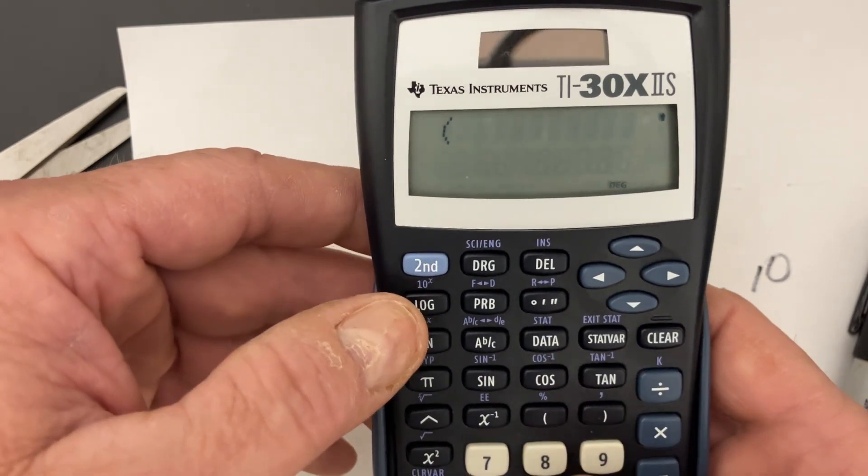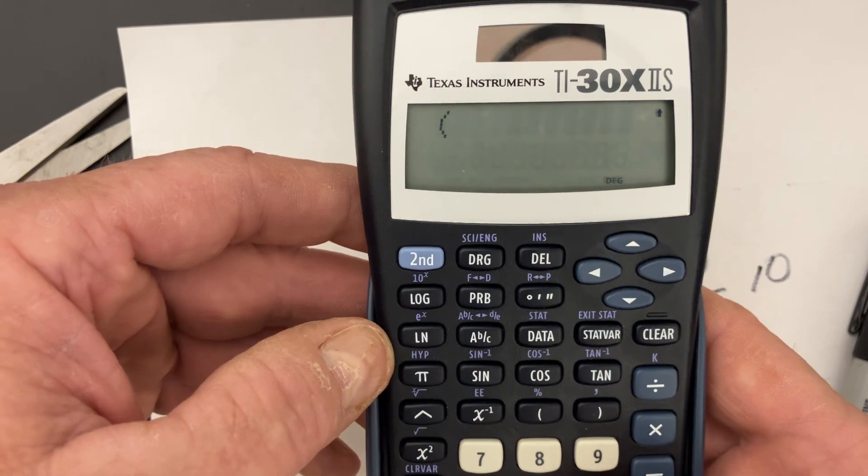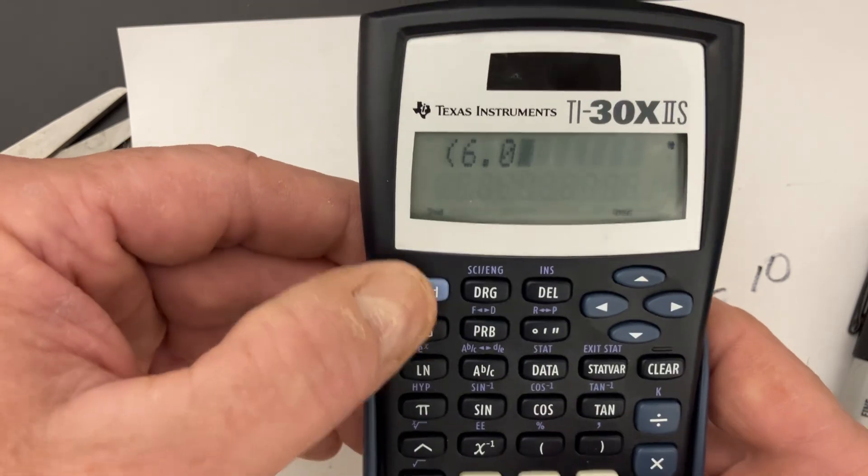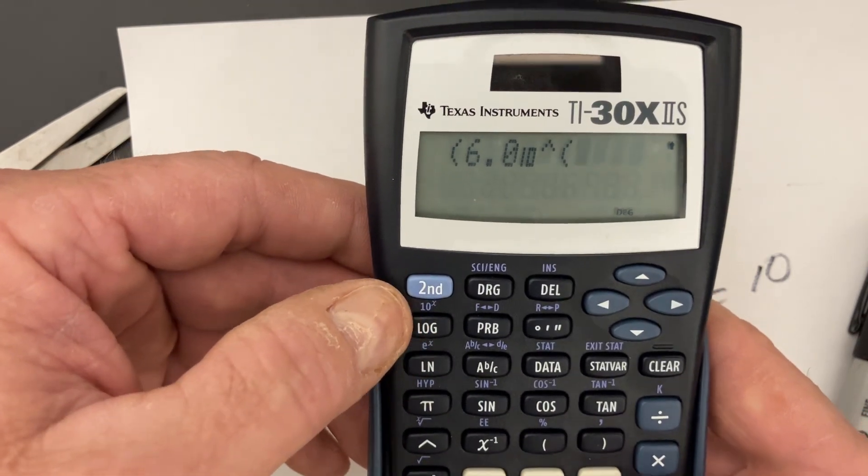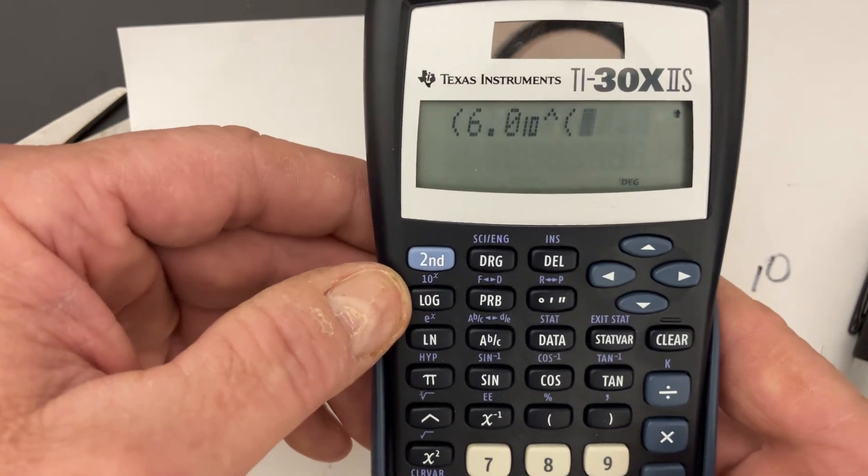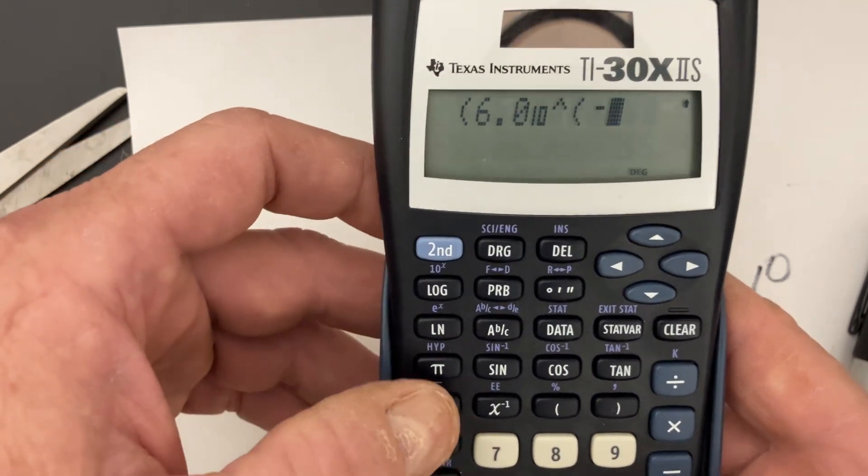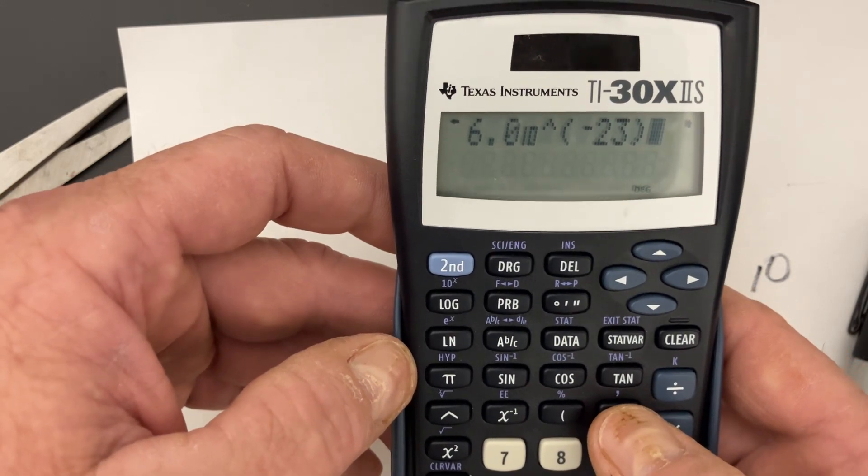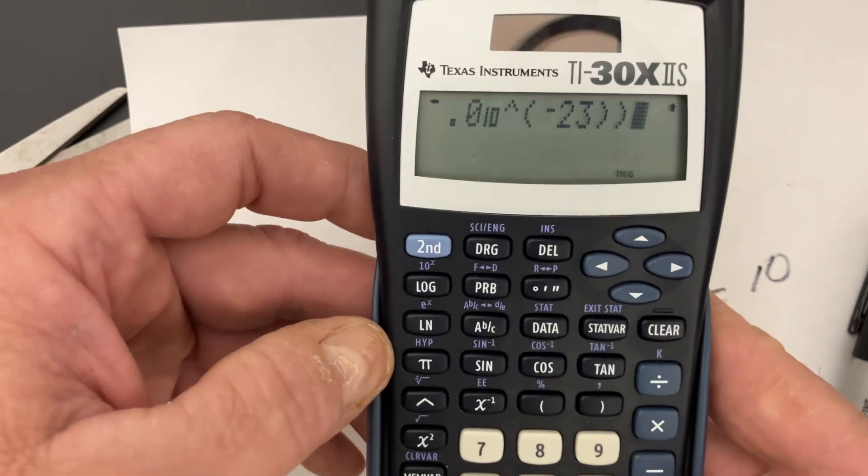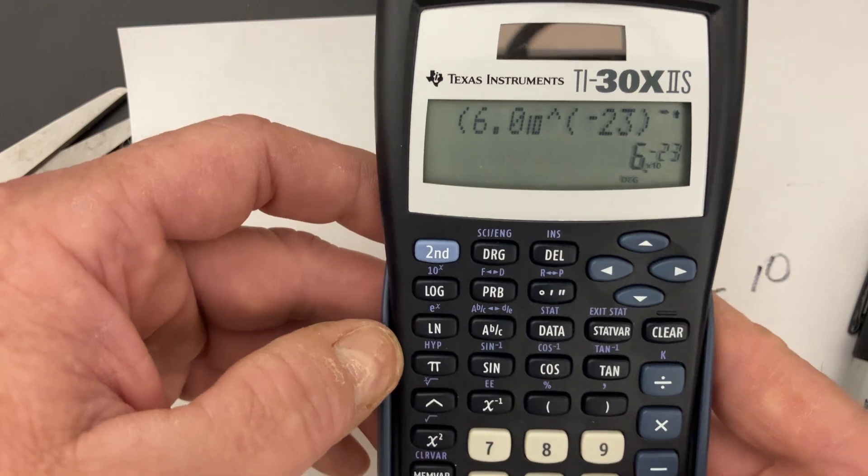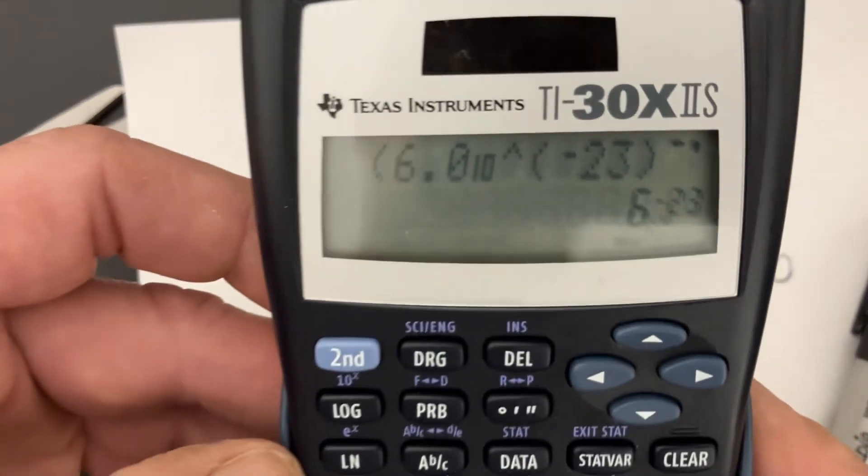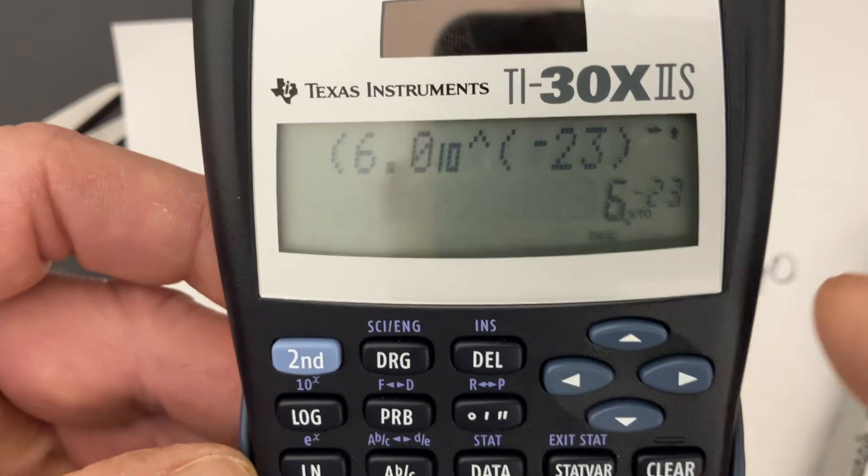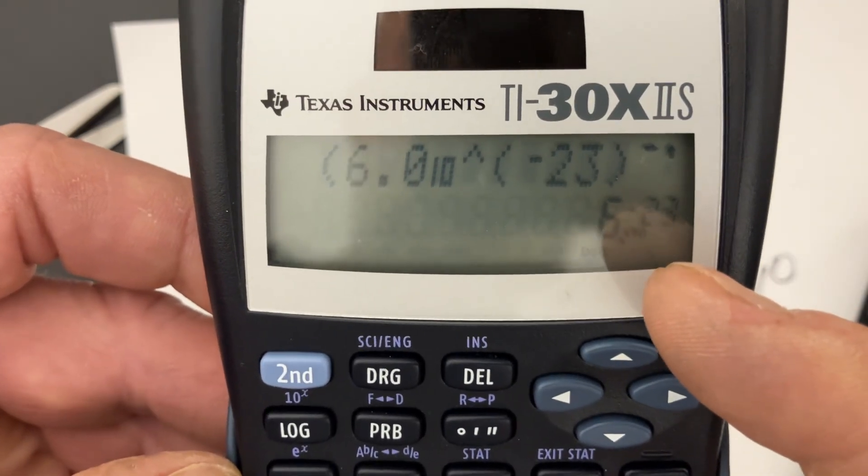We're going to hit bracket every time we see a scientific notation, 6.0. I'm just going to have 6.0 times 10, then negative 23. I'm still not going to hit this. I'm going to hit this negative down here, and then hit 23. Close the bracket for the 10. Close the bracket again for the whole number. Hit equals, and it should give me 6 times 10 to the minus 23. And it does.